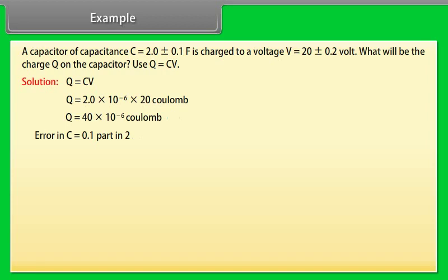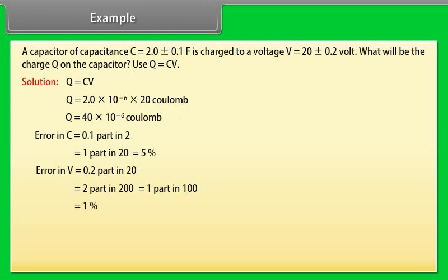Error in C is equal to 0.1 part in 2 is equal to 5 percent. Error in V is equal to 0.2 part in 20 is equal to 1 percent. Error in Q is equal to 5 percent plus 1 percent is equal to 6 percent.